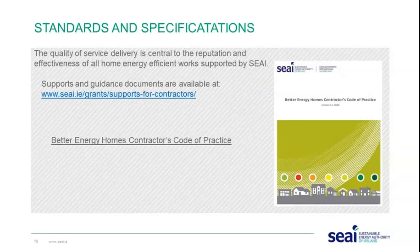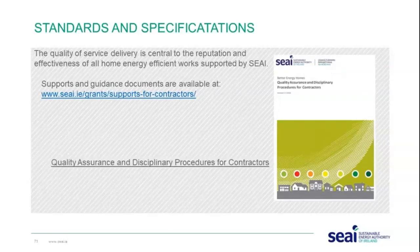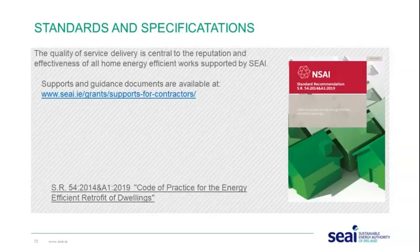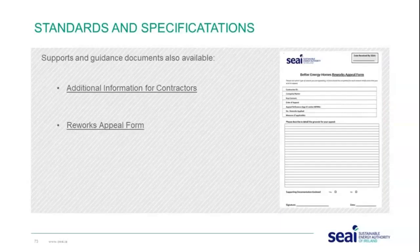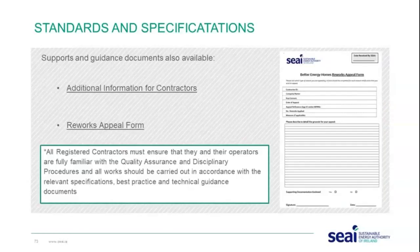Available documents include the Better Energy Homes Contractors Code of Practice, the Quality Assurance and Disciplinary Procedures for Contractors, and SR 54 — which is a very useful document for retrofitting homes, providing all the information needed on insulation materials, different methods, and how to install them. All registered contractors must ensure they and their operators are fully familiar with the quality assurance and disciplinary procedures, and all work should be carried out in accordance with the relevant specifications.